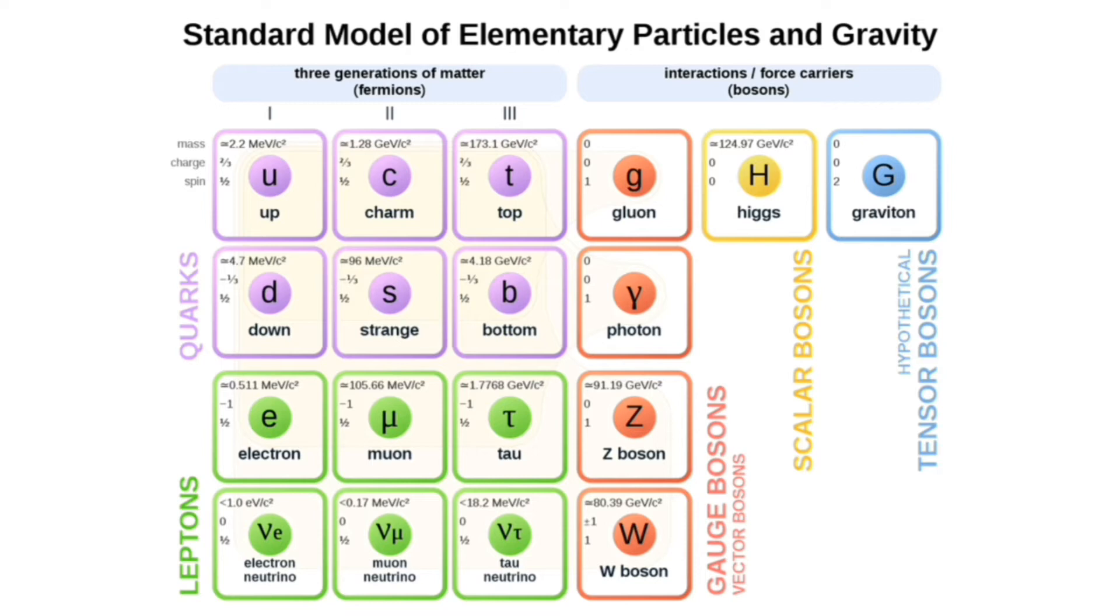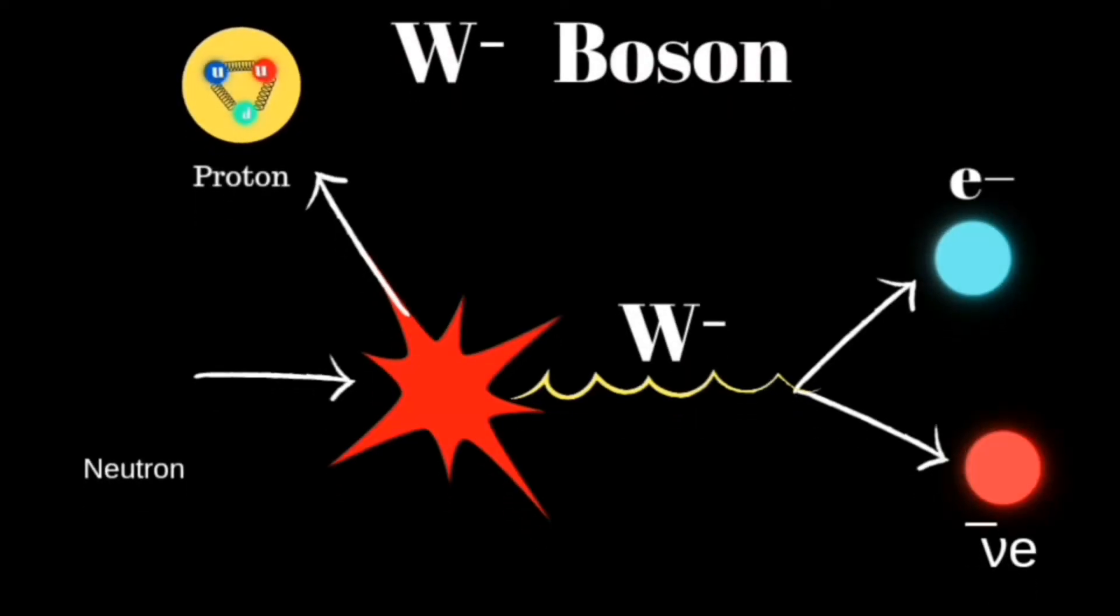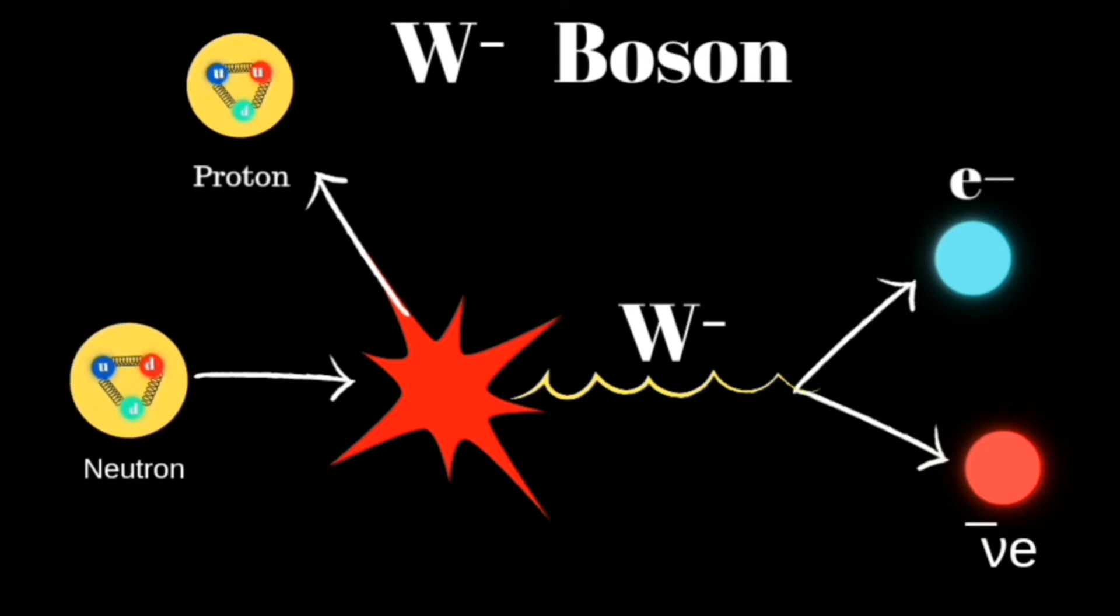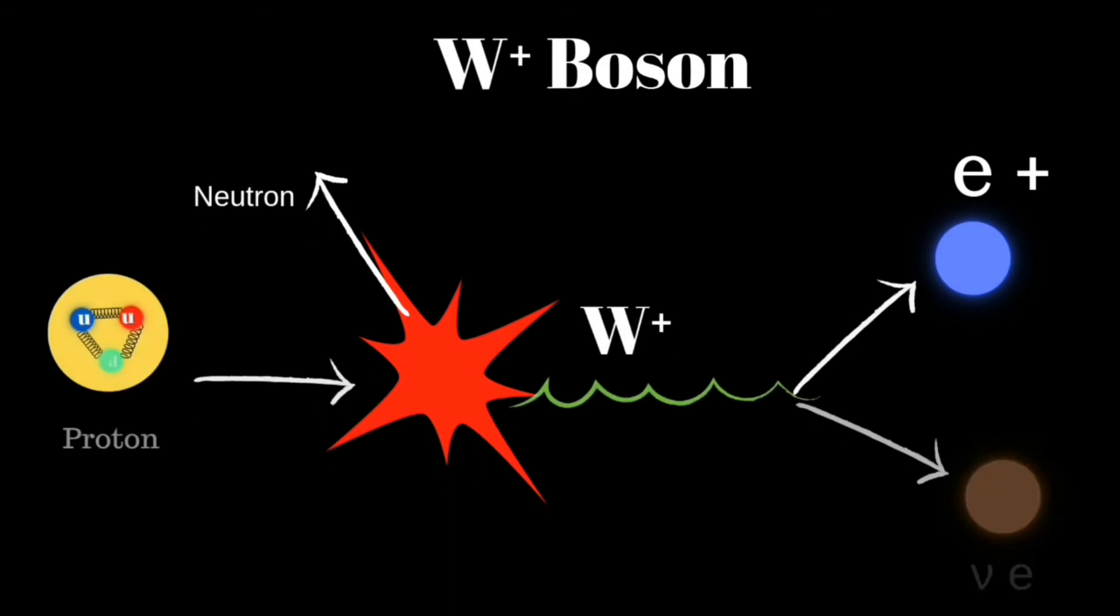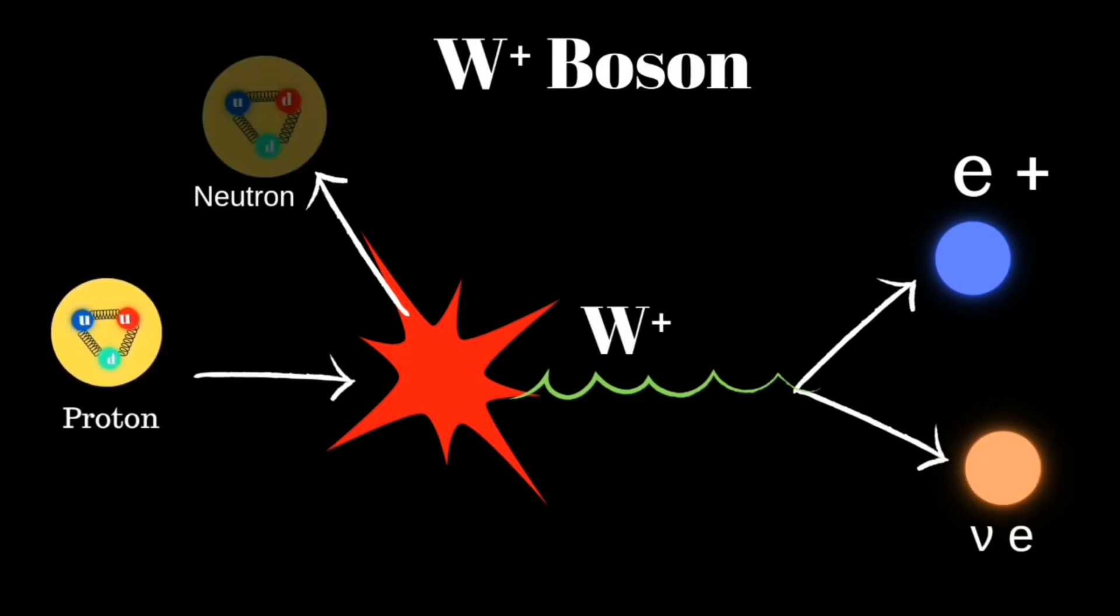There are two types of W boson. One with negative electric charge, the W minus boson. In beta minus decay, W minus boson is created when a neutron is converted to a proton. Immediately, W minus boson decays into an electron and an electron antineutrino.